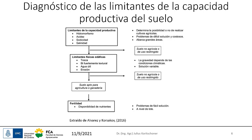Acá tenemos un esquema, un flowchart de decisiones, por las cuales si llego a un suelo que estoy conociendo, lo primero que tengo que ver es cuáles son las limitantes principales de la capacidad productiva. Vamos a tener limitantes generales: hidromorfismo, acidez, sodicidad, salinidad, que determinan cuestiones más generales como la posibilidad o no de cultivos agrícolas; son problemas de difícil solución. Esto se relaciona mucho con las capacidades de uso y el índice de productividad. Si tengo alguna de estas limitantes generales, el suelo es de uso muy restringido o no agrícola.